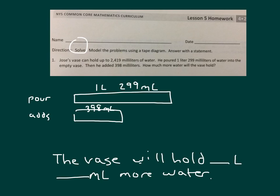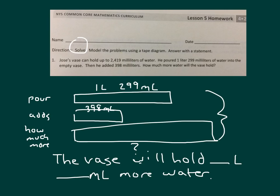What we need to know is how much more the vase will hold. So this is how much more, where we have a bar that we don't know how much more it is. And all together, there's 2,419 milliliters.